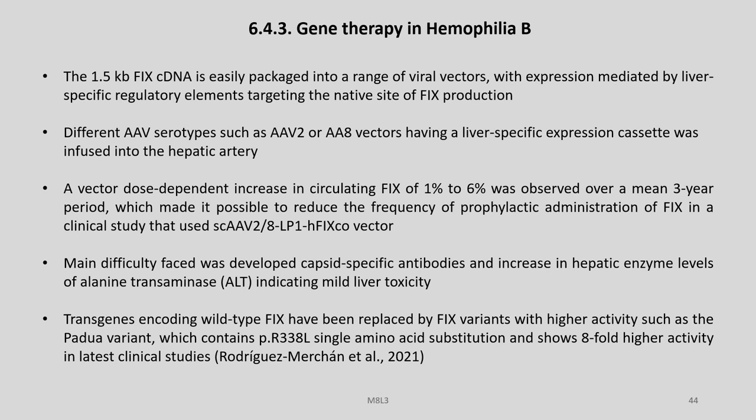Gene therapy in Haemophilia B: the 1.5 kb cDNA is easily packaged into a range of viral vectors, with expression mediated by liver-specific regulatory elements targeting the native site of F9 production. Different AAV serotypes such as AAV2 or AAV8 vectors having a liver-specific expression cassette were infused into the hepatic artery. A vector dose-dependent increase in circulating F9 of 1% to 6% was observed over a mean three-year period, which made it possible to reduce the frequency of prophylactic administration of factor 9 in a clinical study that used scAAV2/8-LP1-hFIX vector. The main difficulty faced was development of capsid-specific antibodies and increasing hepatic enzyme levels of alanine transaminase, indicating mild liver toxicity.